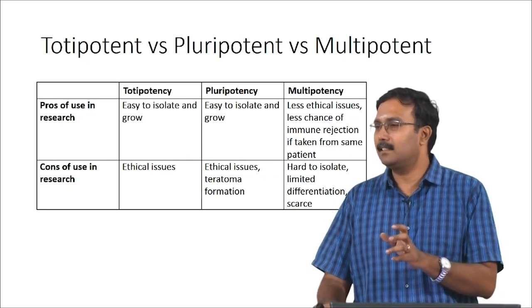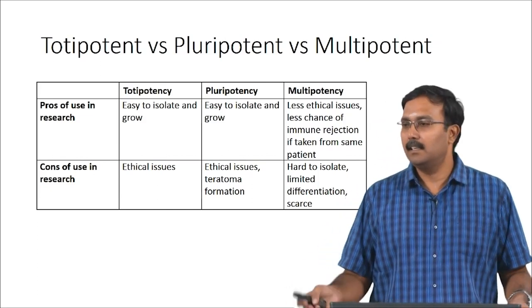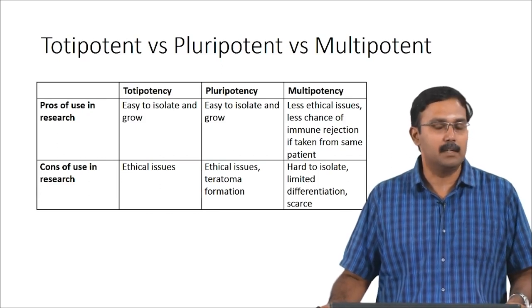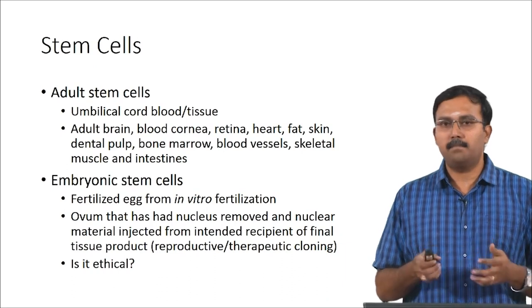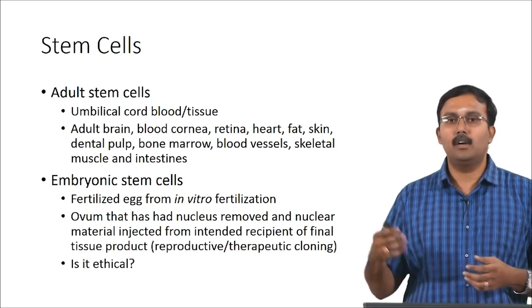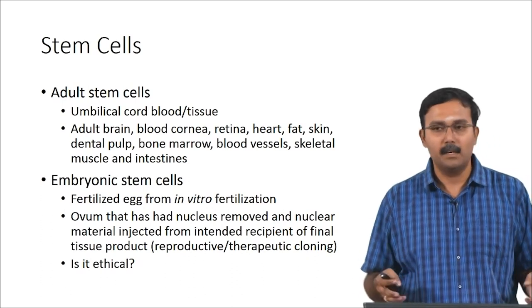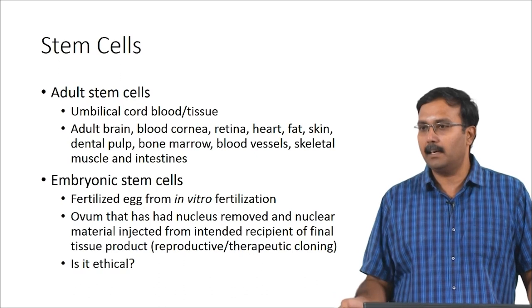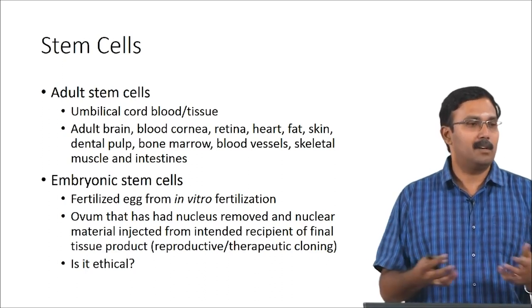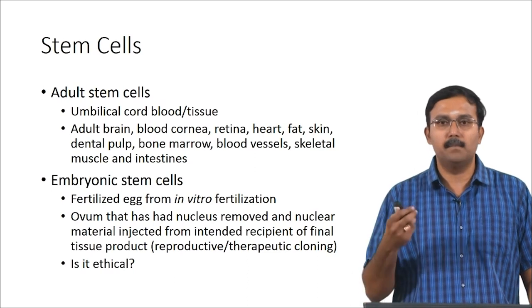Teratoma is like a cancer tissue which contains tissues from all three dermal layers — it is a problem specifically with embryonic stem cells, and iPSCs may also have the same problem. Adult stem cells are primarily obtained from large sources such as umbilical cord blood or tissue, and also from brain, cornea, retina, heart, fat, skin, dental pulp, bone marrow, blood vessels, skeletal muscles, and intestines. The number of cells you harvest depends on the source — umbilical cord has the most abundant numbers, bone marrow has significant numbers, while sources like dental pulp yield smaller numbers.